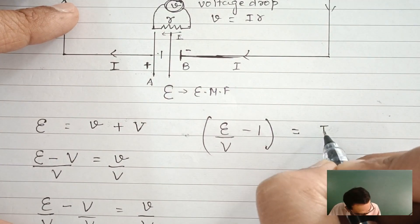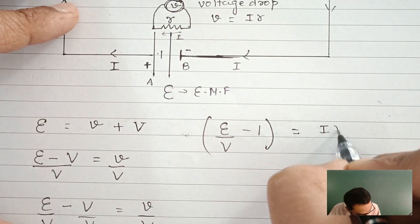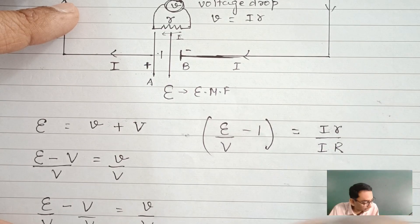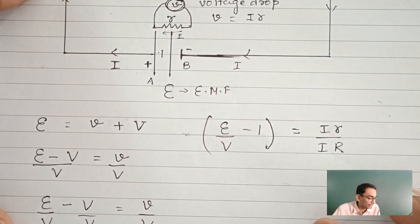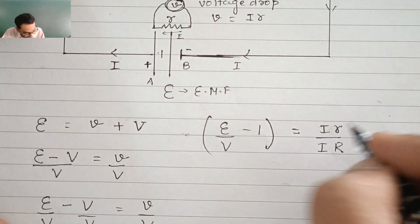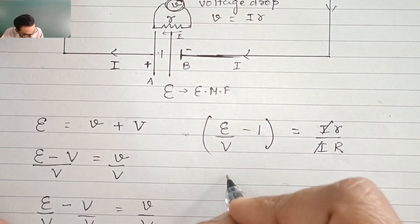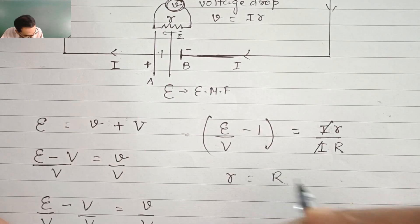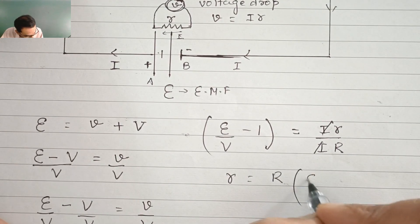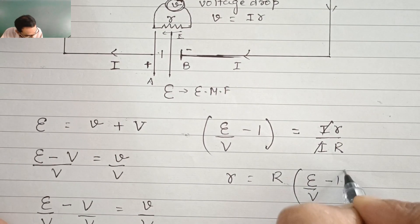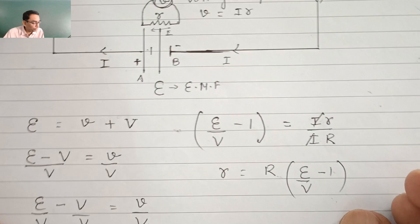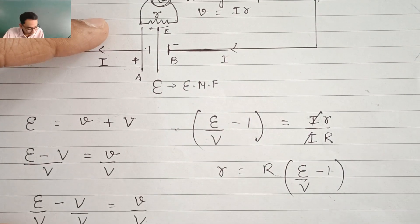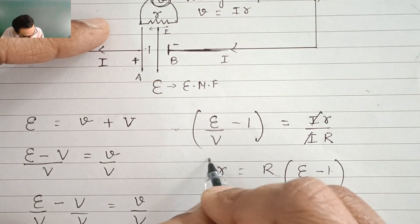Substituting, this becomes I times r upon I times R. The currents I cancel, and r goes over. So that equals r/R, which equals E/V minus 1. If your purpose was just to derive the relationship, you could stop here.